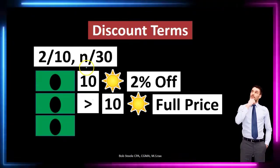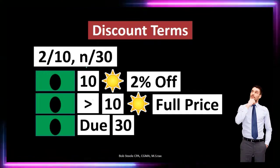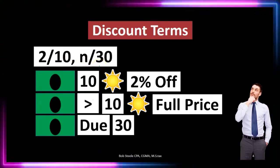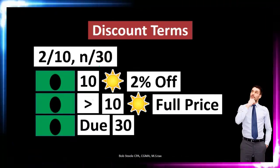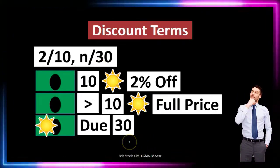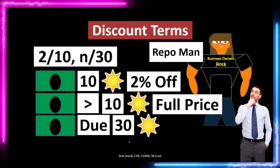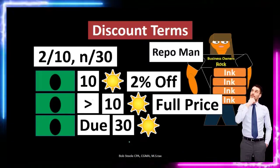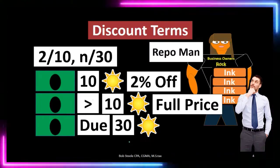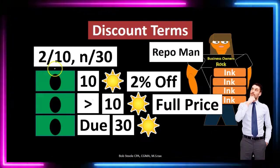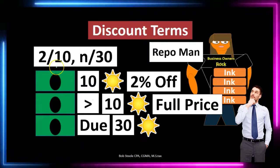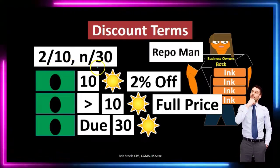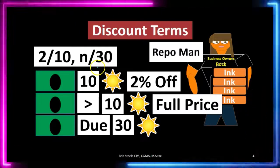The last part — the n/30 — means that payment is due within 30 days. So if you don't pay within 10 days that's fine; the payment is due under the normal agreement, which in this case is 30 days. If it's not paid within 30 days we might take collection actions. In essence: a 2% discount if paid within 10 days; otherwise it's due within 30 days, and if you don't pay within 30 days you're past the payment due period.